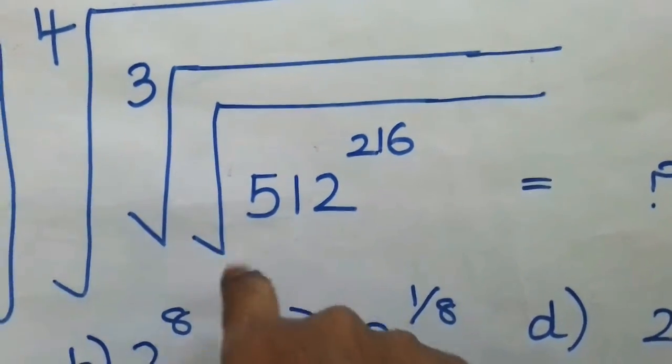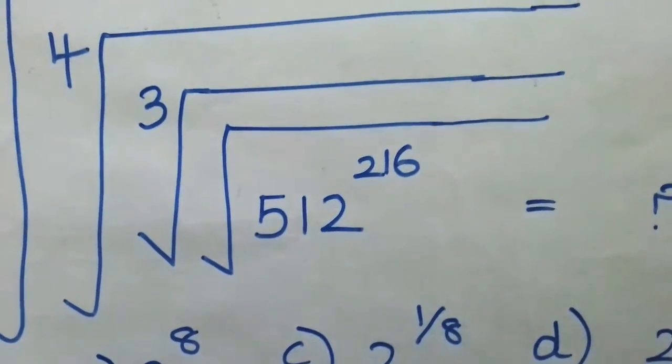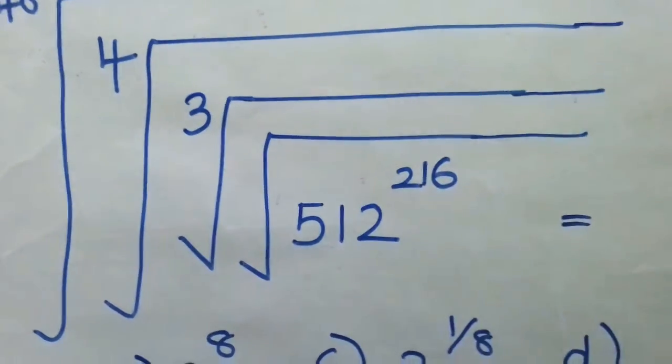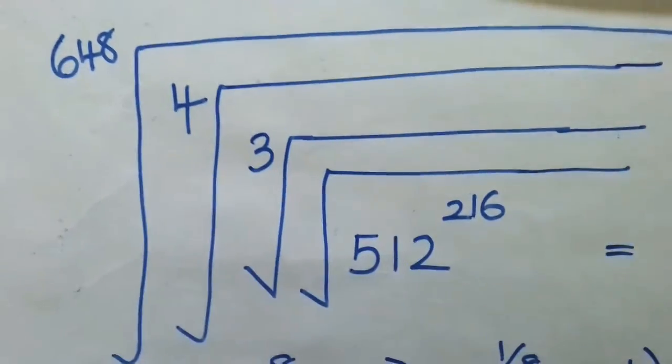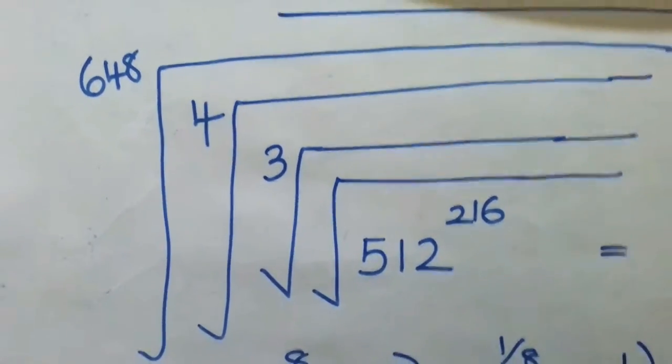We have the square root, then cube root, then fourth root, then 648. So, you can solve this.